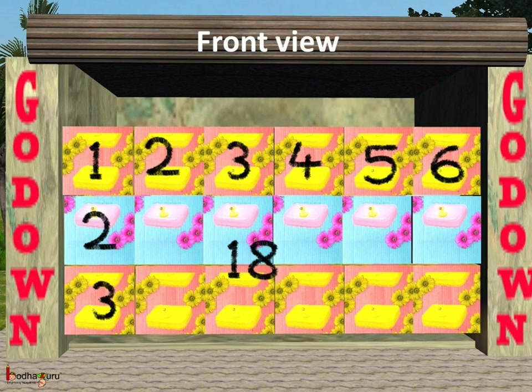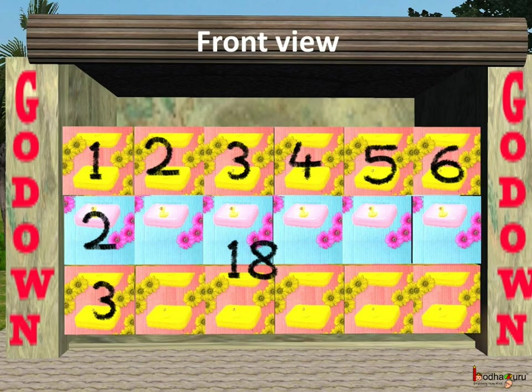Behind this stack, there were 4 more such stacks. So a total of 5 stacks of boxes were there in the godown. Manilal thought there were 18 multiplied by 5, which is equal to 90 boxes, as there were 5 vertical stacks one behind the other, each having 18 boxes as seen from the front view. Now let us see from the top to view all these 5 stacks.